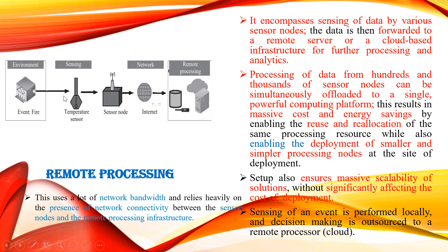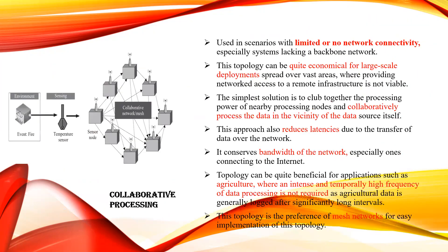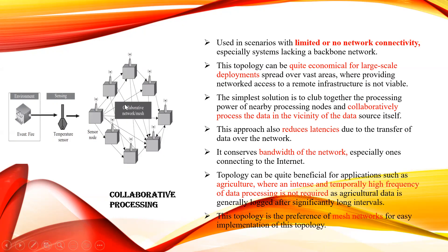Sensing of an event is performed locally and the decision is outsourced to the processing unit. In collaborative processing scenarios, there is limited or no network connectivity, because all the nodes are connected in the form of a mesh — in contact with each other. This topology is quite economical for large-scale deployment. One solution is to club together all the processing power of nearby nodes.